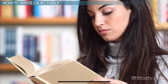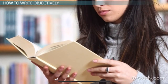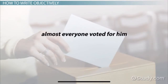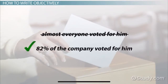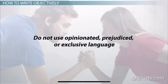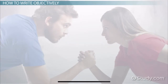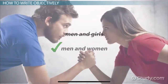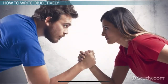To keep your writing objective, try to follow these tips. Be specific instead of vague or general. Rather than writing 'almost everyone voted for him,' write '82% of the company voted for him.' Do not use opinionated, prejudiced, or exclusive language. Rather than writing 'men and girls,' write 'men and women.' Keep both equal, and keep both genders listening to you.